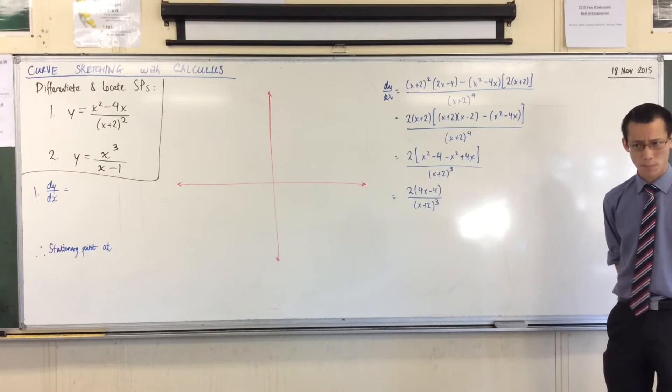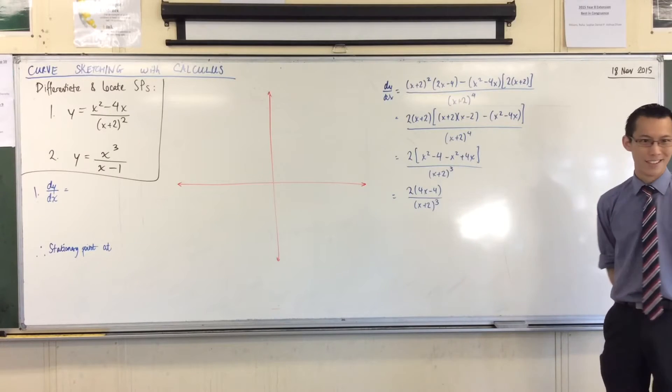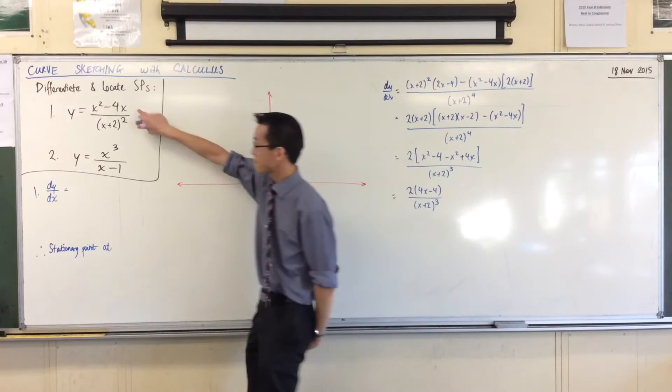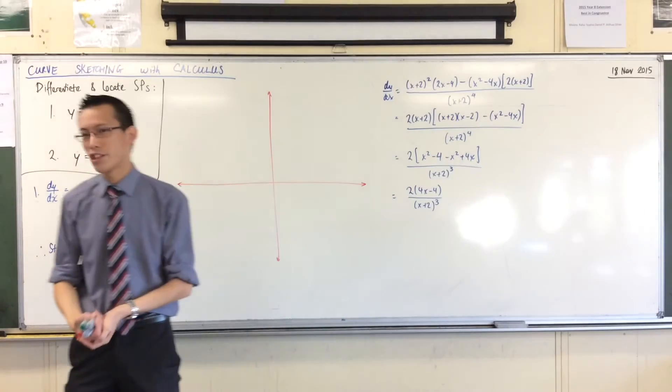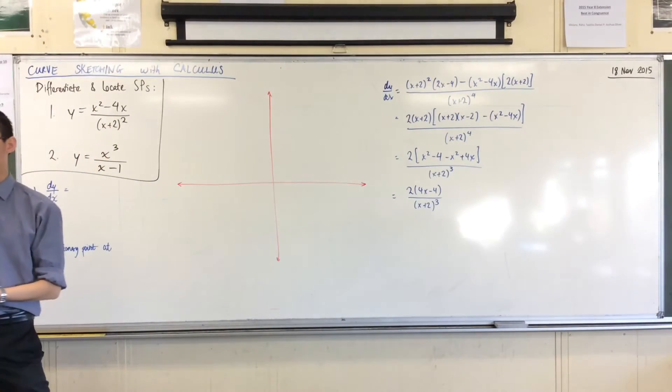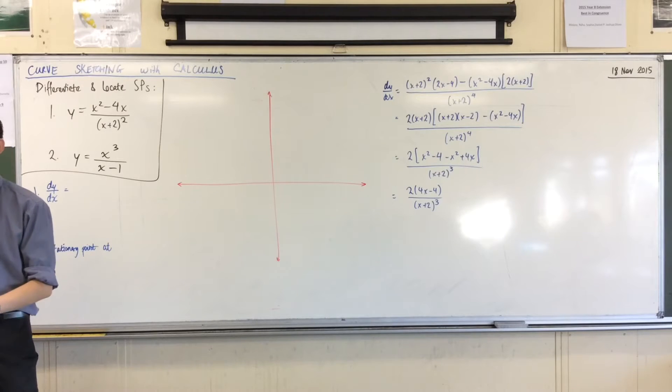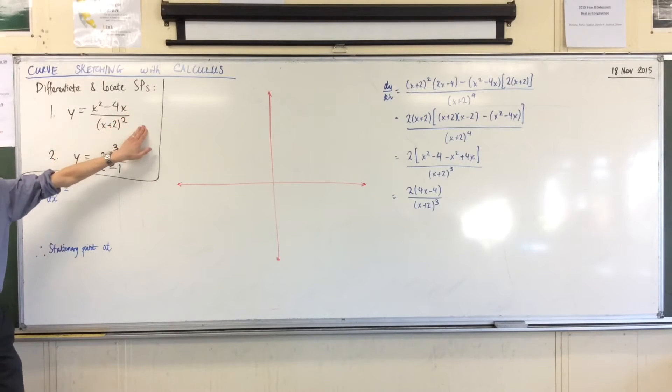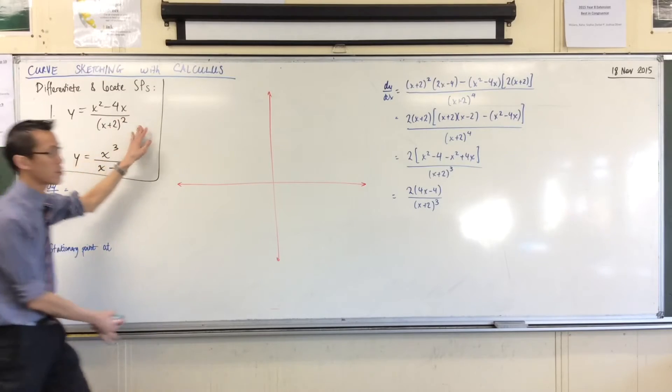But there are actually a couple of things I want to point out. So, to begin with, you look at this, you look at it, and it's a quotient, and there's nothing you can get away from the quotient there, so it's like, okay, gross, but let's take a deep breath and dive in. So I'm going to say u, v, and then I'm going to go ahead with the quotient rule.